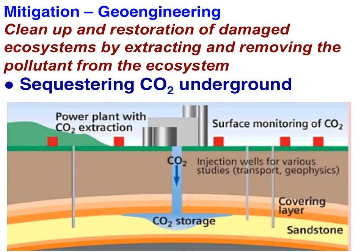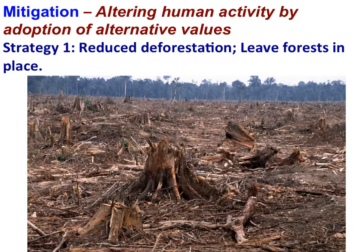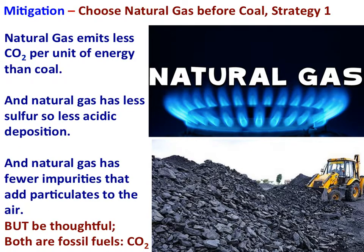A level three mitigation strategy would be to employ geoengineering — for example, sequestering carbon dioxide from the atmosphere and storing it in solid form below the ground. This is a level three strategy: clean up and restoration of damaged ecosystems by extracting and removing the pollutant. A mitigation strategy would also be to reduce deforestation. By leaving trees in place, trees remove carbon dioxide from the atmosphere — a level one strategy.